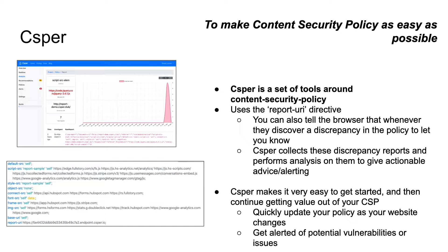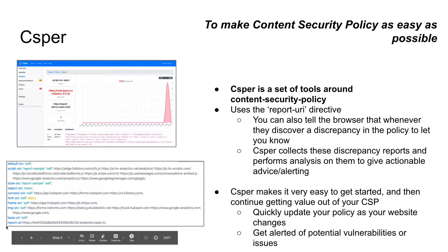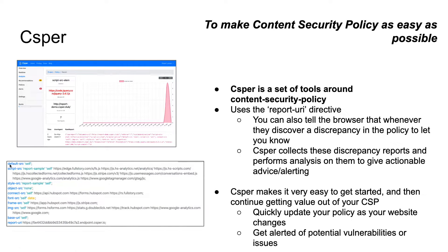Casper aims to address these two challenges. The goal of Casper is to make content security policy as simple and easy as possible. Casper is a set of security tools around content security policy. The core of Casper uses a feature within CSP called the report URI. As a website owner, you can configure it such that when clients connect to your website and download that content security policy, you can tell the browser: if you detect any discrepancy between what the website is giving you and what my policy says, let me know through this report URI.